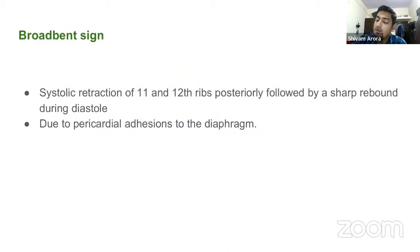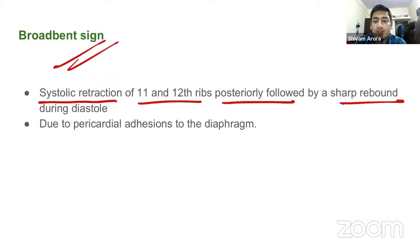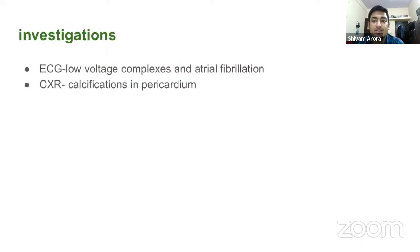Broadbent's sign is also seen in constrictive pericarditis: there is systolic retraction of the 11th and 12th ribs posteriorly, followed by a sharp rebound during diastole, due to pericardial adhesions to the diaphragm. On investigations, ECG can show low-voltage complexes and atrial fibrillation, and chest X-ray shows calcifications in the pericardium.